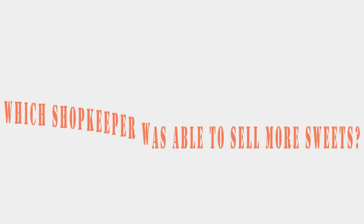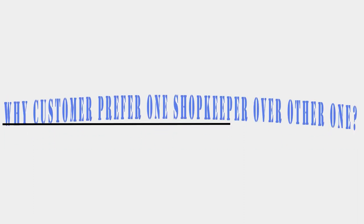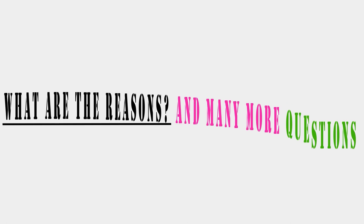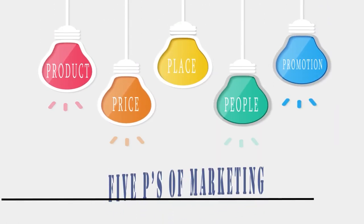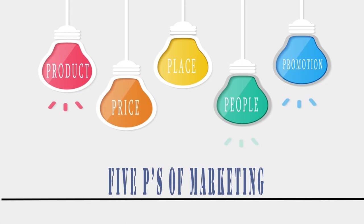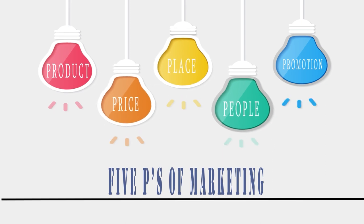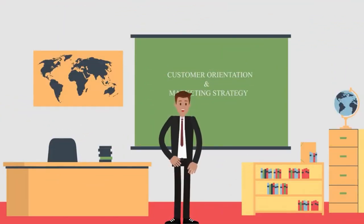Which shopkeeper was able to sell more sweets? Why did customers prefer one shopkeeper over the other? To answer all these questions, you need to understand the five P's of marketing: Product, Price, Place, People, and Promotions. This helps you increase your sales. Now prepare your business using the five P's of marketing.